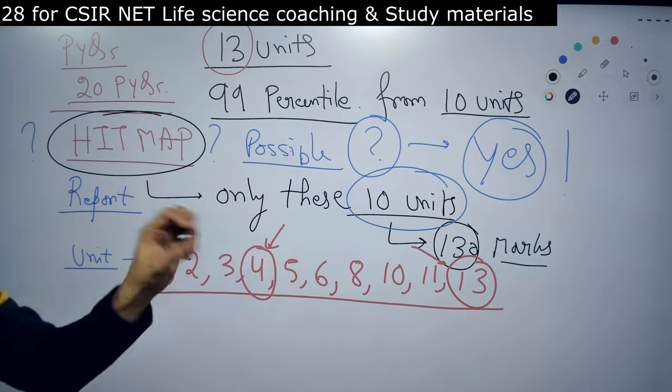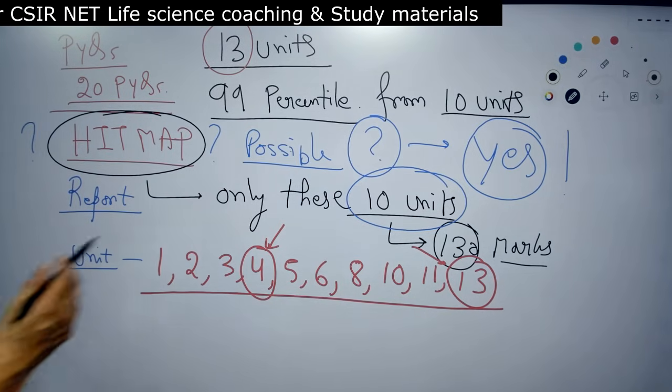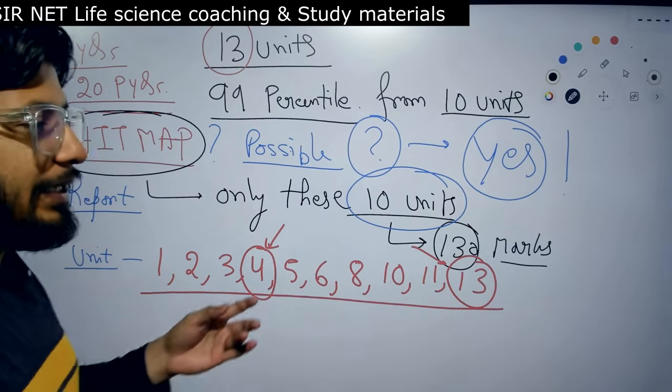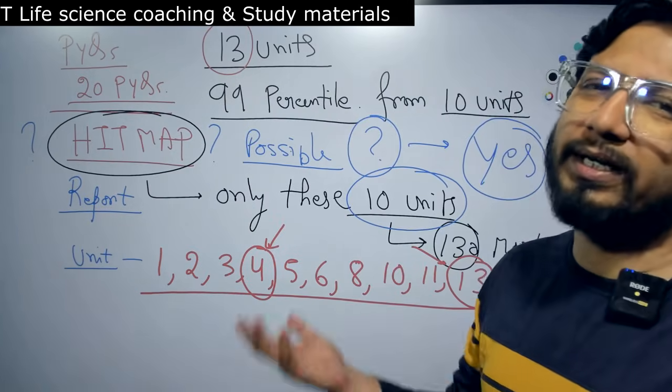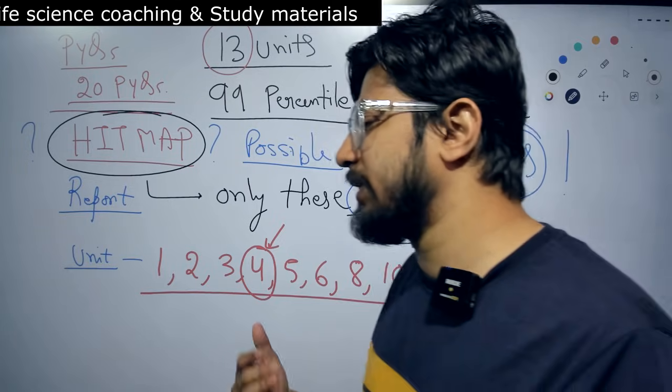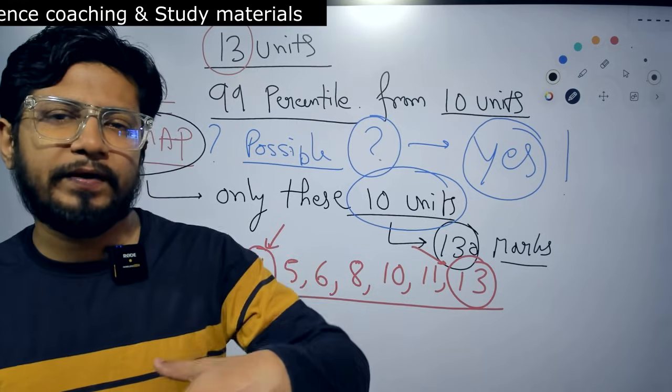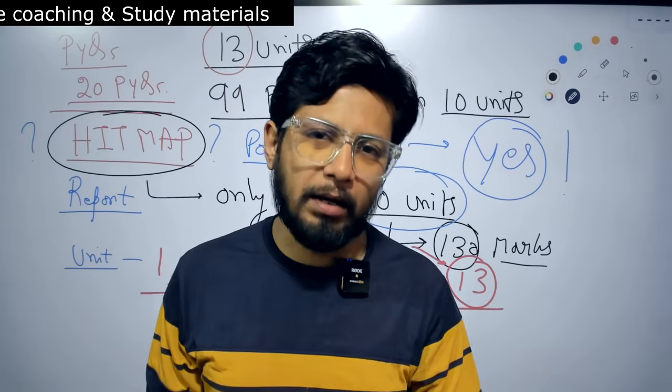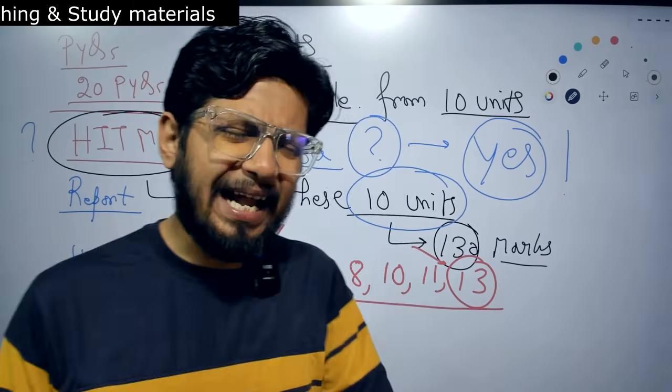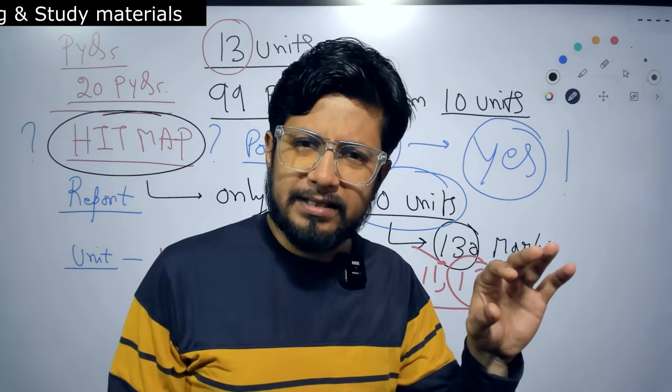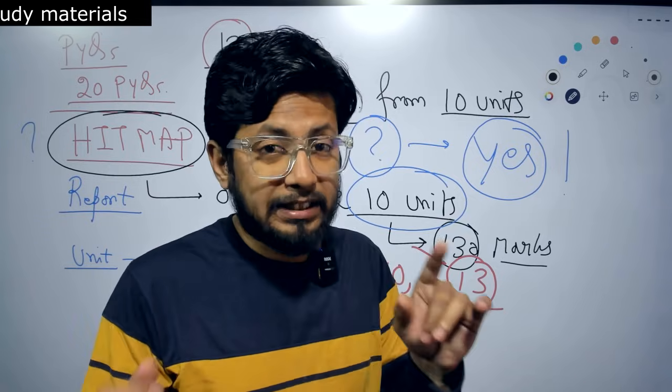These are the list of units important to score 99 percentile. We are scoring 130, which is way beyond 99 percentile. Generally speaking, the marks you need to qualify to get JRF is 120 and above. 130 is a very very good score at any given session of CSIR NET, speaking from my experience of teaching for 12 years.